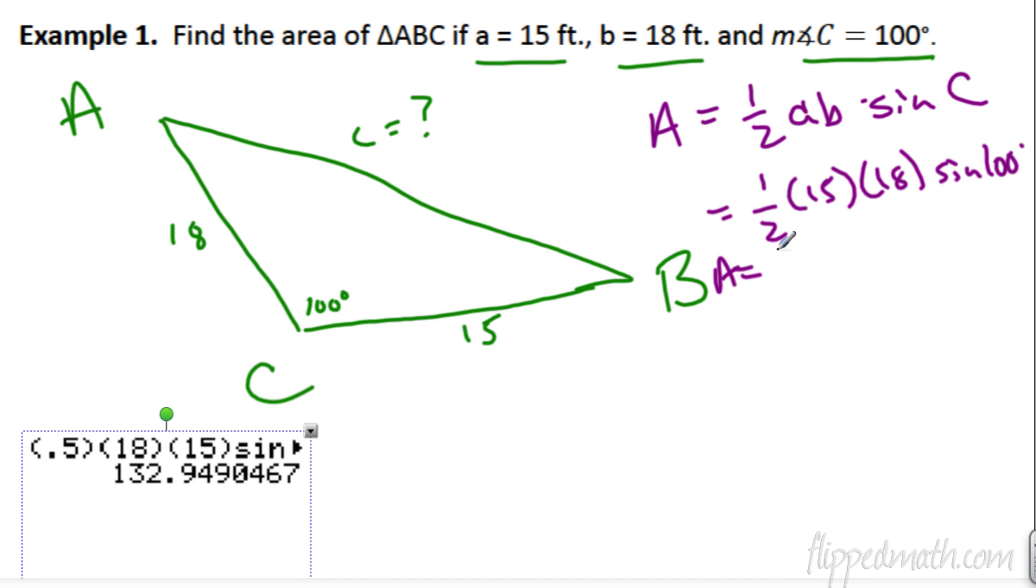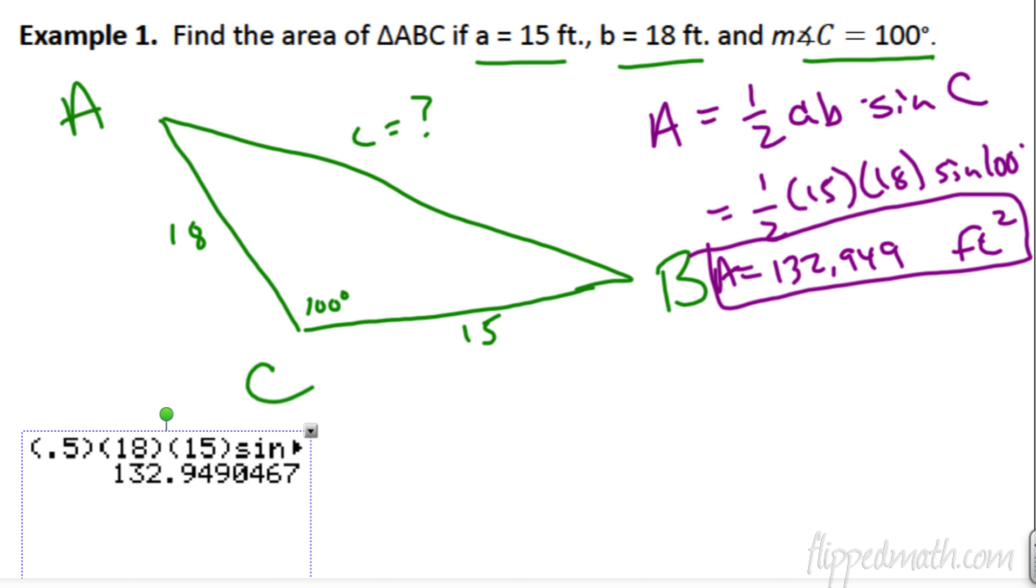And, do we know the sine of 100? I bet it's ugly, but that's okay. So, we figure that all out. We're going to get the area is going to equal 132.949. It does say the units. Square feet. Remember, that square goes on, it's a unit. It's a square foot. That's how you find the area of this triangle. How easy is that?